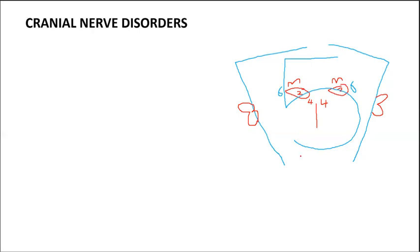Number nine is the glossopharyngeal nerve, drawn in the area of the mouth. The name contains 'pharyngeal' — pharynx — so it serves the pharynx, helps with swallowing, and innervates the posterior third of the tongue for taste. Those two vital functions are swallowing and taste sensation from the posterior tongue.